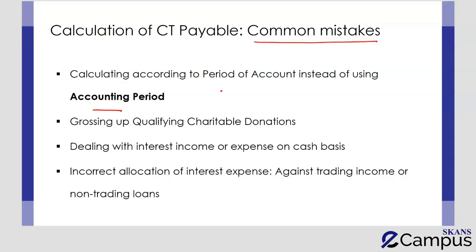The donation made under the Gift Aid scheme for individuals requires grossing up the figure in order to add it to the basic band. However, a common mistake observed when students handle Corporation Tax questions is that they start grossing up the figure of qualifying charitable donation, which should not be done, because the QCD figure — qualifying charitable donation — for Corporation Tax purposes is by default a gross figure.